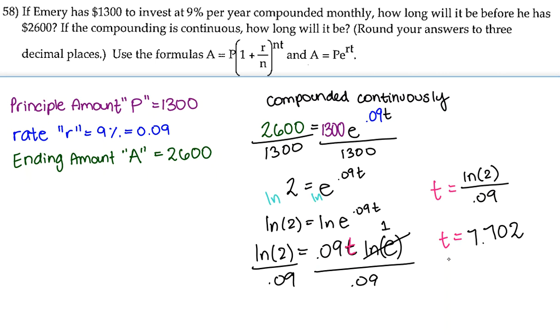So when we are compounding monthly, it'll take Emery 7.73 years. And when we are compounding continuously, it'll take Emery about 7.702 years.